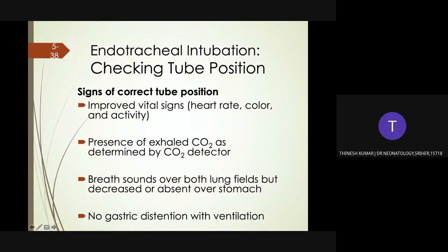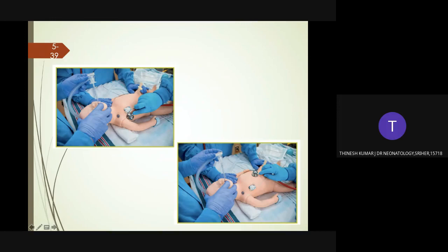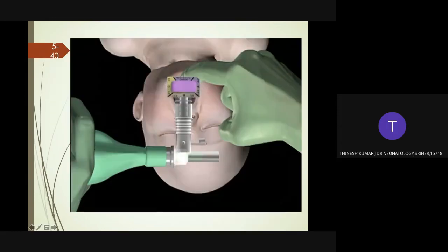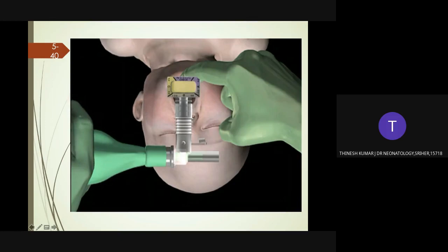How to check whether the endotracheal tube is in the correct position: the most important sign is improved vital signs — increasing heart rate, the baby becoming pink and active, and increased muscle tone. Other signs include the presence of exhaled CO2 as indicated by the CO2 detector, breath sounds over both lung fields but decreased or absent over the stomach, and no gastric distension with ventilation. Colorimetric CO2 detectors change from purple to yellow in the presence of carbon dioxide. If the tube is in the trachea with adequate cardiac output, the color change should occur within five breaths.